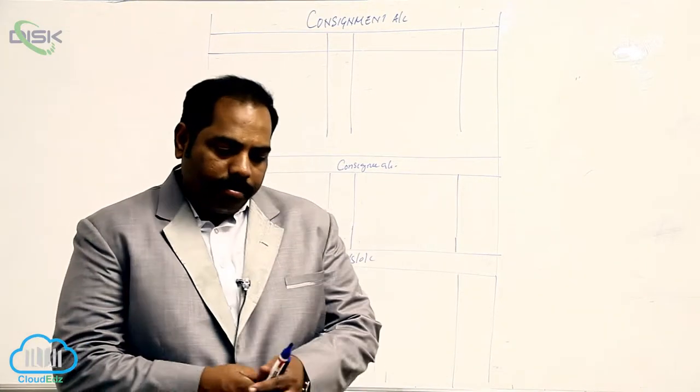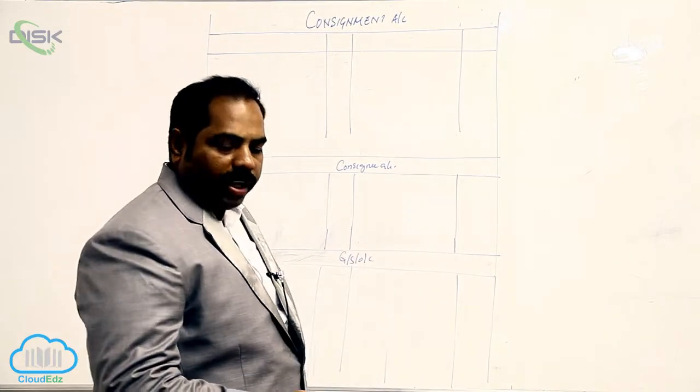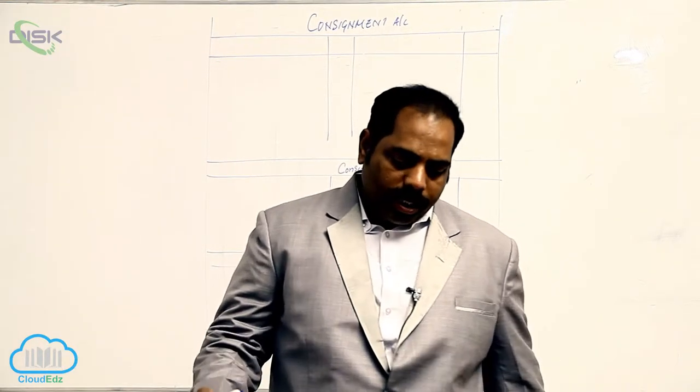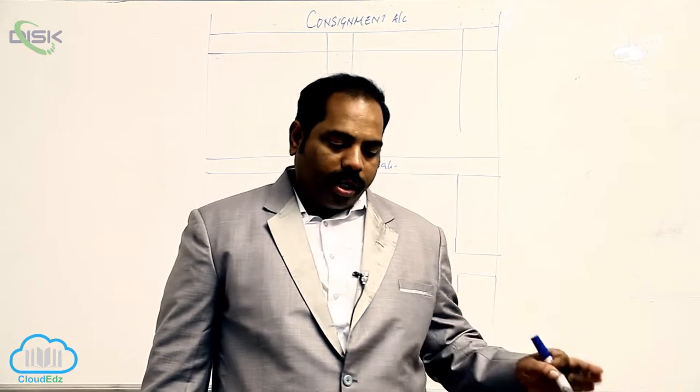Today we are going to continue the 10th problem. Anand of Hyderabad consigned goods worth Rs. 20,000 to his agent Arvind of Kodat on consignment.